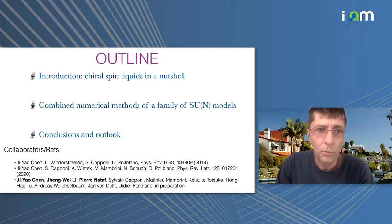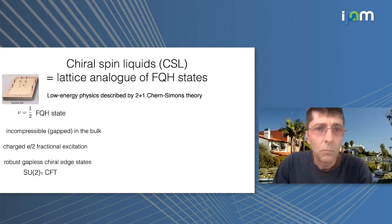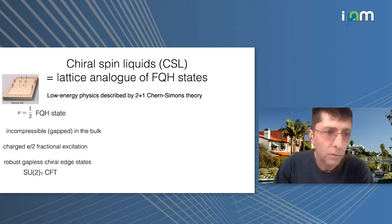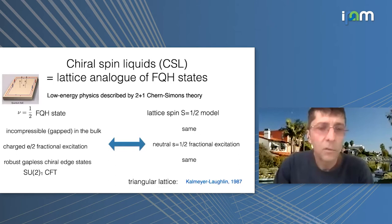We have this cartoon of the fractional quantum Hall effect: a 2D electron gas with chirality, with an edge mode only in one direction — so it's very robust. For a ν = 1/2 fractional quantum Hall state: it's gapped in the bulk (incompressible), the excitations carry fractional charge of one half, and we have this robust chiral edge mode described by a conformal field theory, U(1) level one. Now can we get the same on the lattice with a spin-1/2 model?